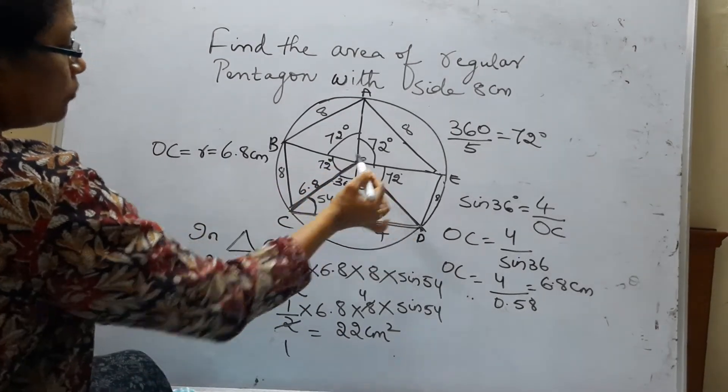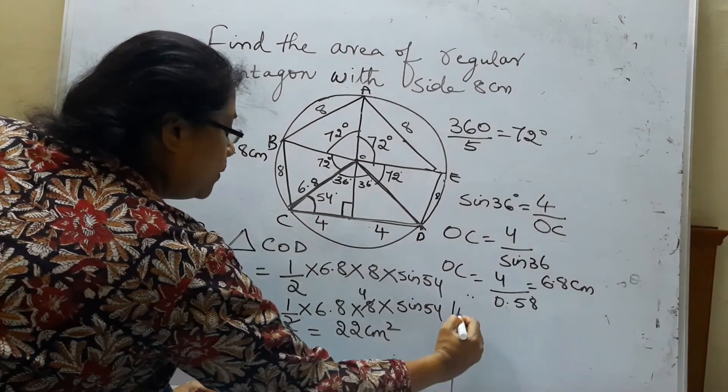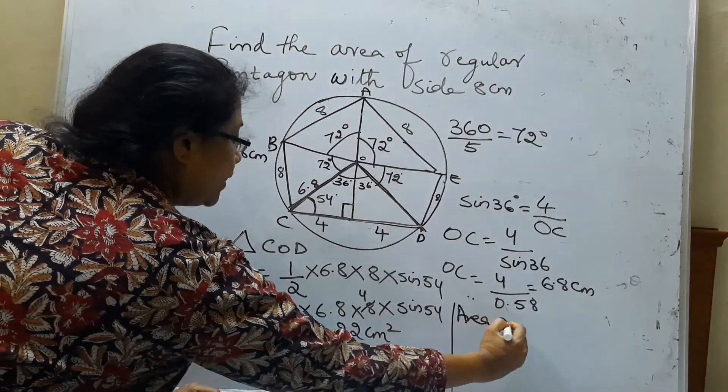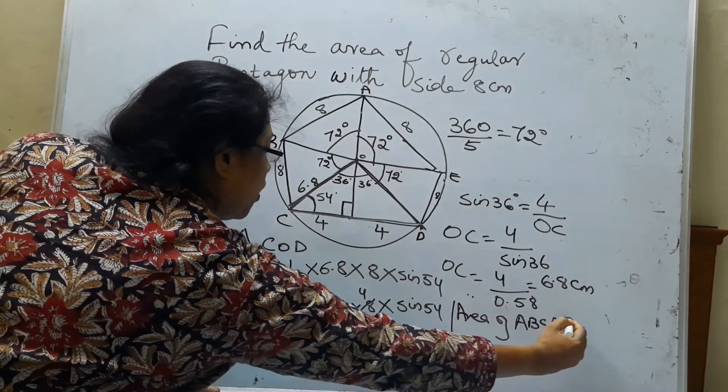Now we got the area of COD. But we have 5 triangles. So what is the area then? The area of pentagon ABCDE would be...